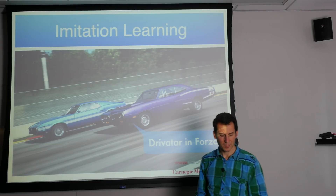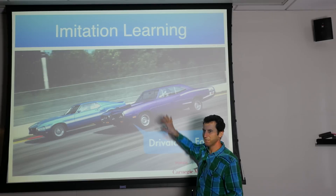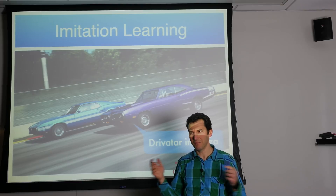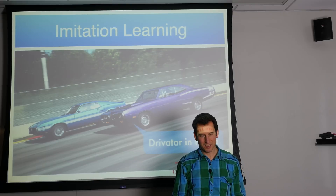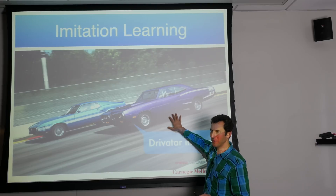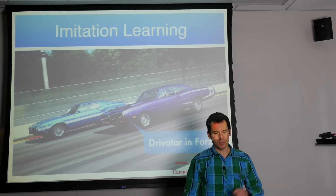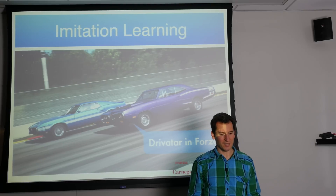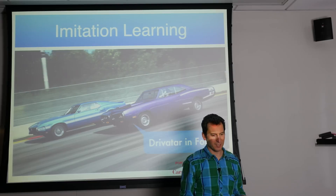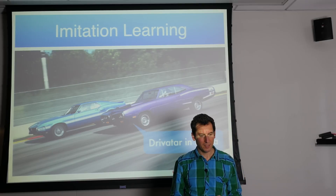Here's another example: driver droids in Forza, also for the Xbox. If different players race against each other but play at different times — say, one at night and one in the morning — you can train a driver droid that mimics your driving behavior as closely as possible. If you drive into walls, the driver droid will drive into walls. Then you can race somebody else's driver droid, or have both race against each other. It's a nice feature that lets people effectively play with each other. This worked fairly well.